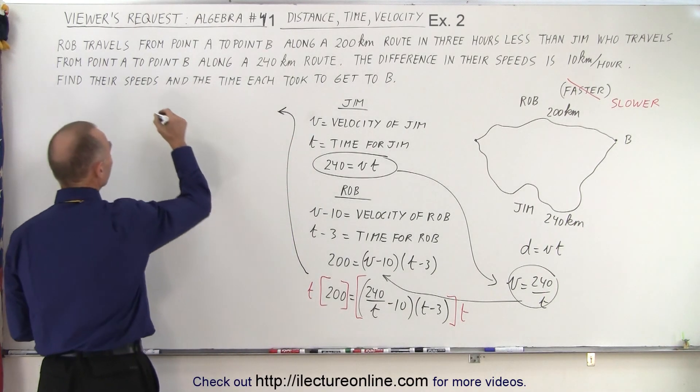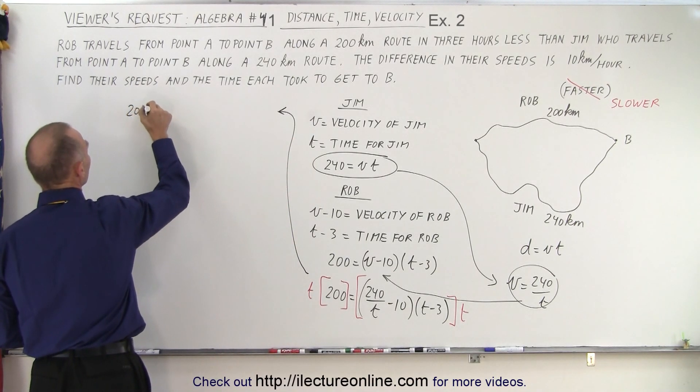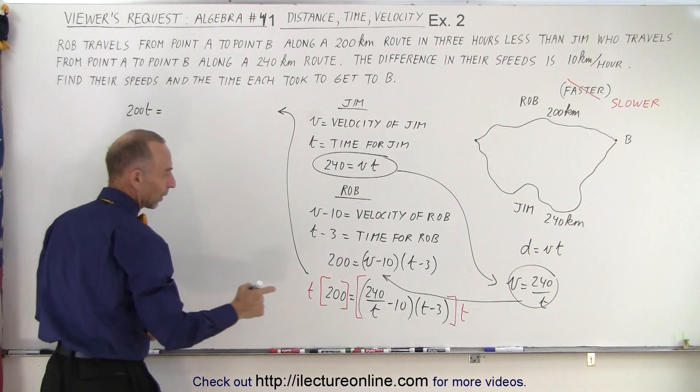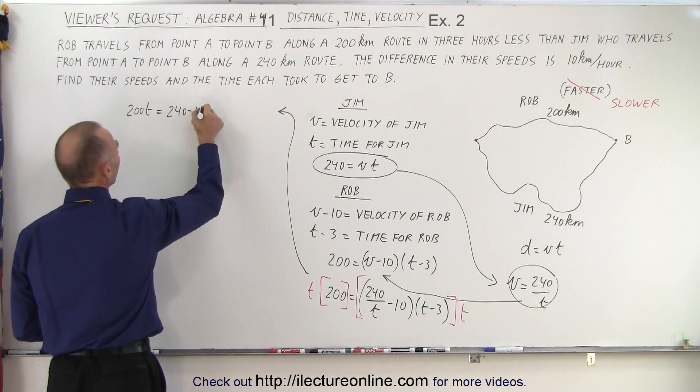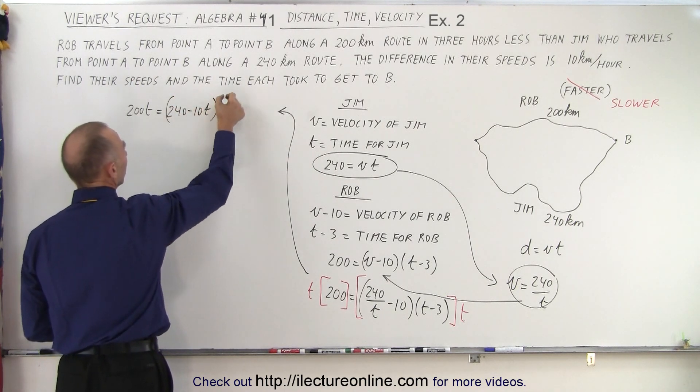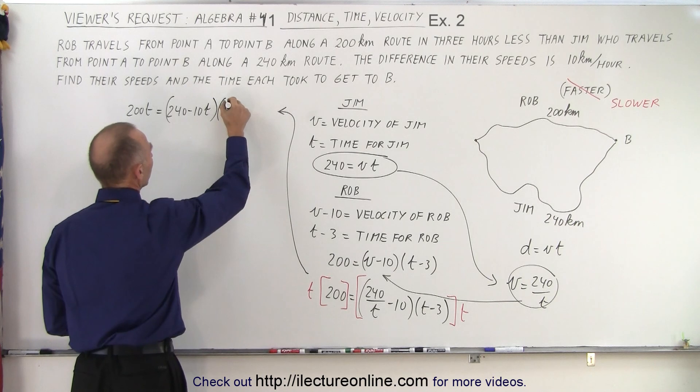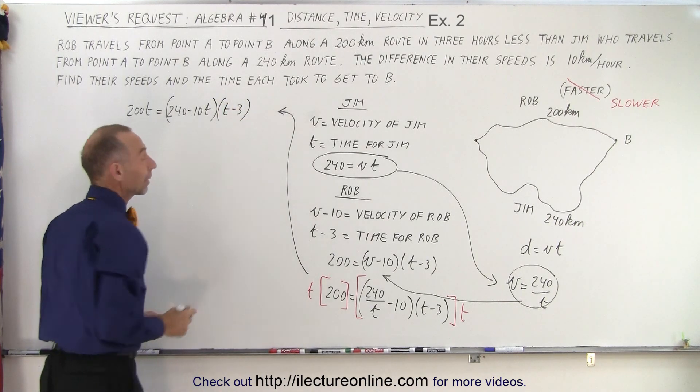On the left side we end up with 200T is equal to, on the right side notice the T's cancel, so we end up with 240 minus 10T, multiply times T minus 3.